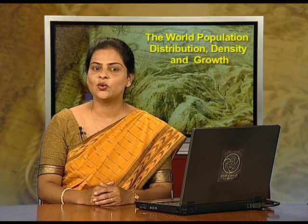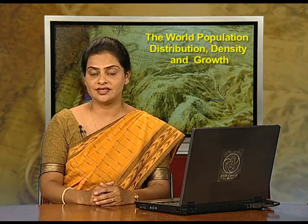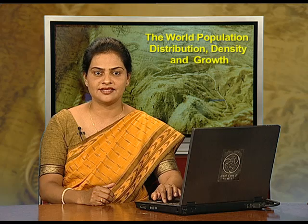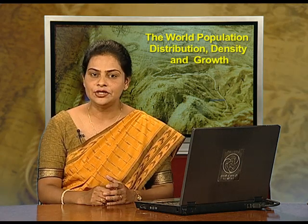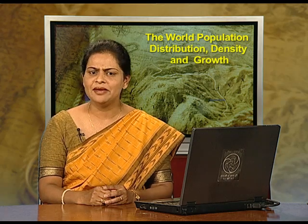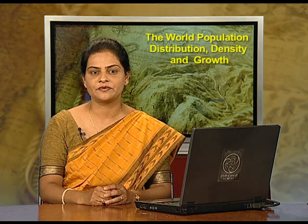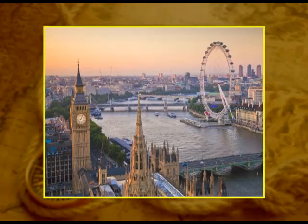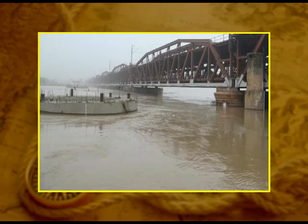Regarding geographical factors, availability of water is the most important. Water is the basic requirement for sustenance. Early human settlements were around fresh water such as river banks. The rivers provide fresh water essential for human activities. Two thickly populated cities on river banks are London and Delhi. You can see the beautiful but thickly populated city of London on the banks of river Thames and Delhi on the banks of river Yamuna.